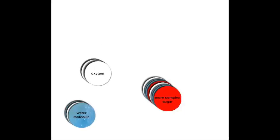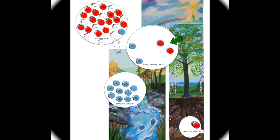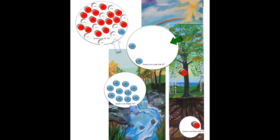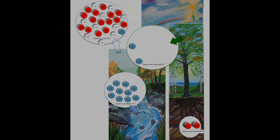That sugar building block can then be used for matter and energy, or combined with other sugars to build more complex molecules that the plant needs — either to build its structures or to use for food and energy. When sugars are combined to make a more complex sugar, sometimes the plant stores that in the root or some other structure where it's available for use later.